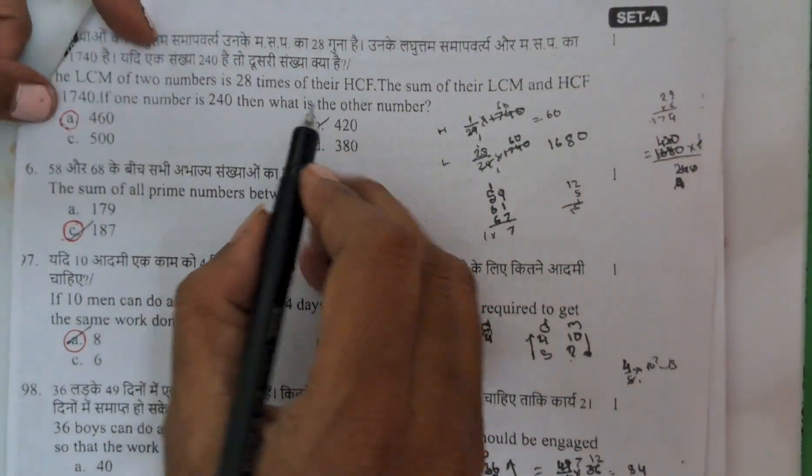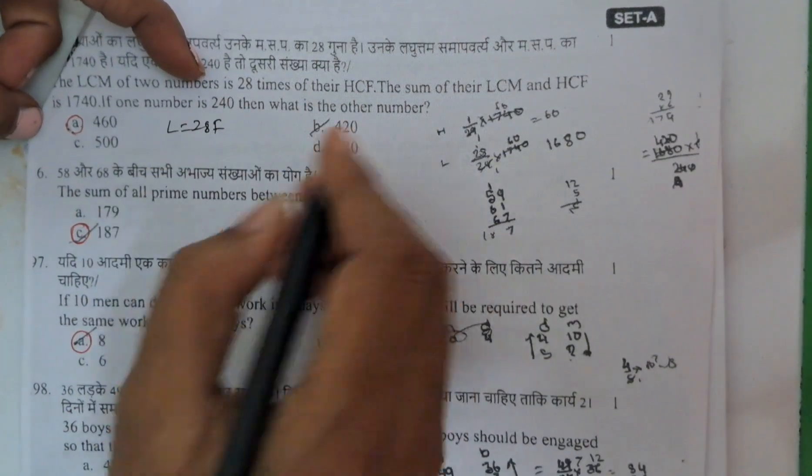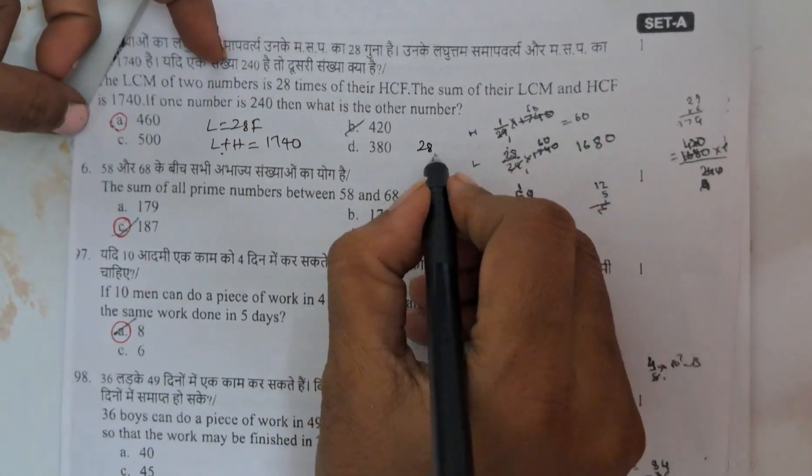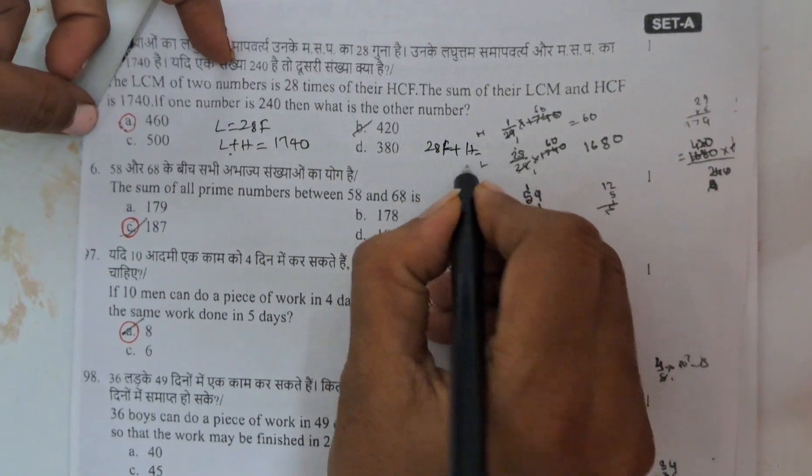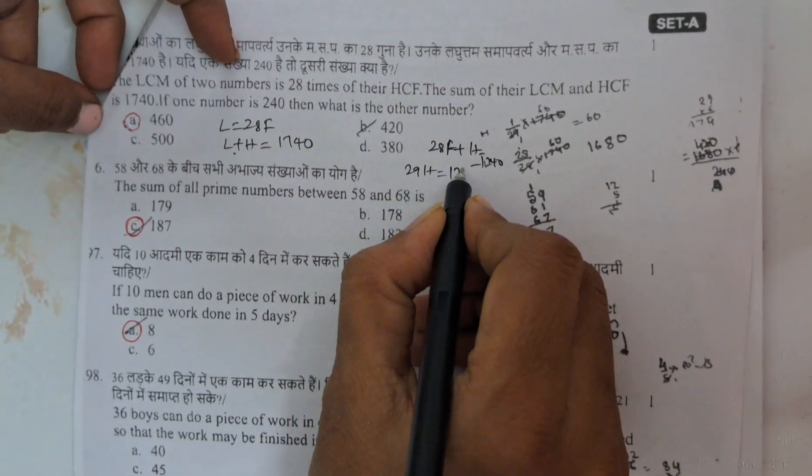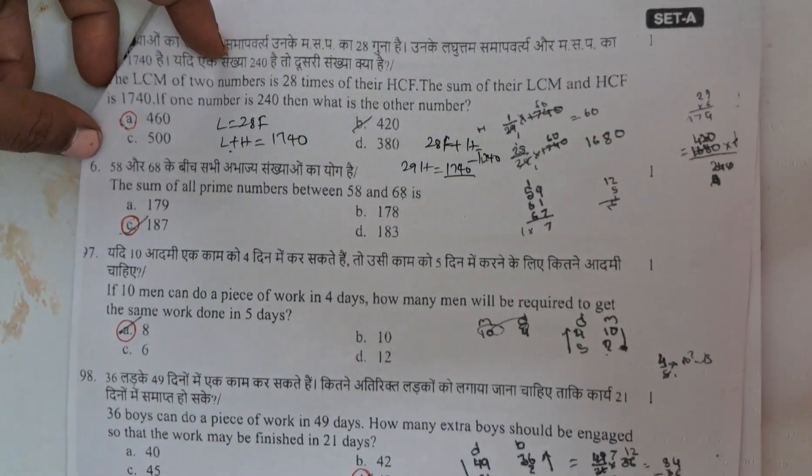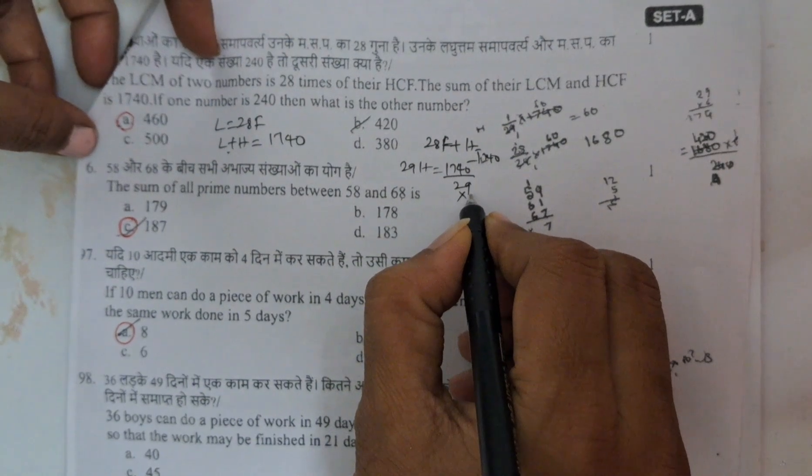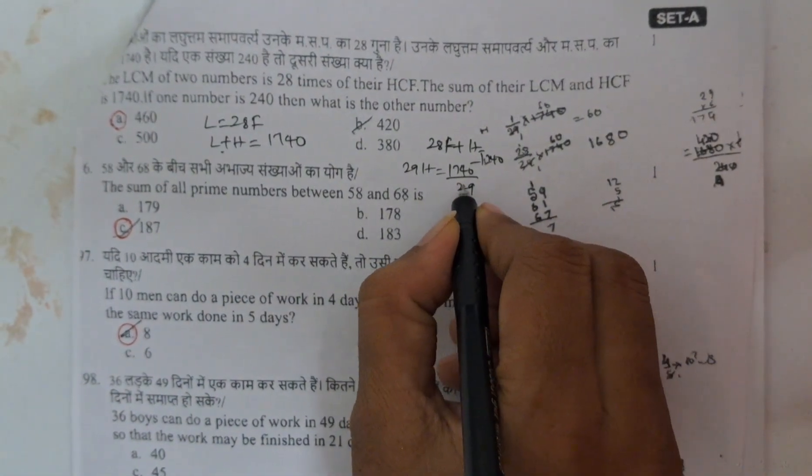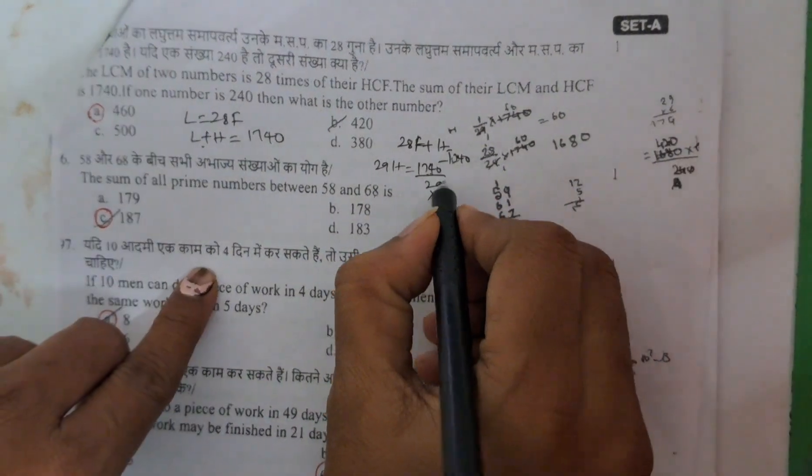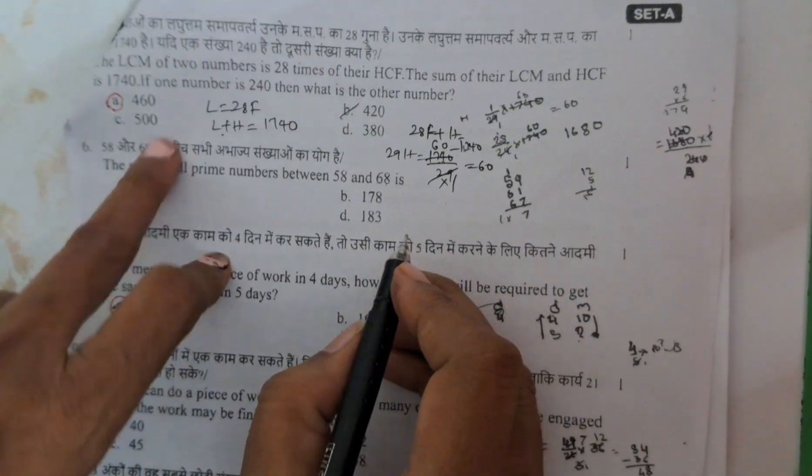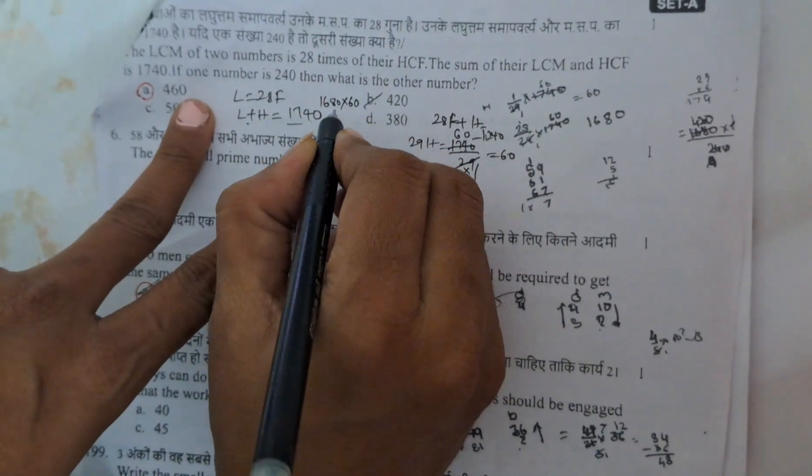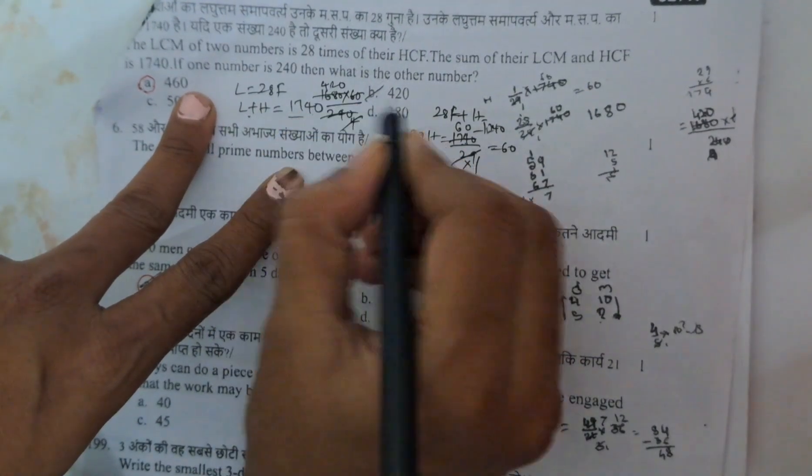Next here, LCM of 2 numbers is 28 times HCF. Means L equals to 28H. Sum of L plus H equals to 1740. In the place of L you can suppose 28H. 28H plus H equals to 1740. Means 29H equals to 1740. Why we are finding these all means? What is the other number formula? L into H by A. 29 by 29. If you do, H is 60. L, what will happen? 1680 into 60 by 240. Answer is 420.